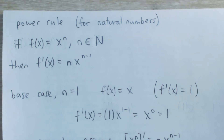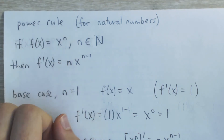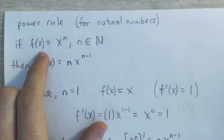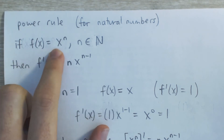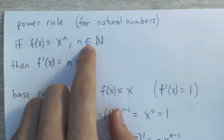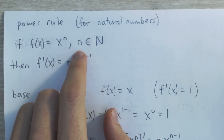Here I'm going to prove the power rule for derivatives, which says that if you have a function f of x which is equal to x to the n. In this case, n has to be a natural number — I'm only going to prove it for natural numbers.